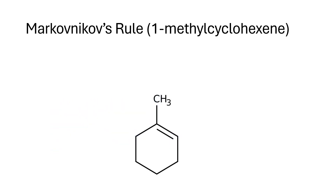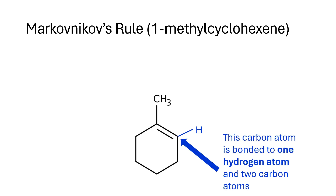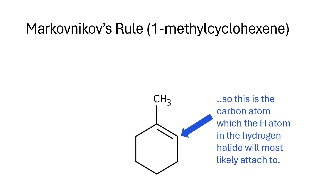If we look at the carbon atom on the right-hand side, that's bonded to one hydrogen atom and two carbon atoms. So this is the carbon atom which the H atom in the hydrogen halide will most likely attach to first.